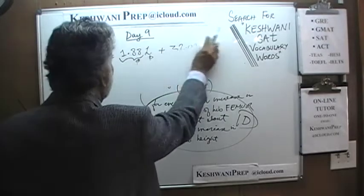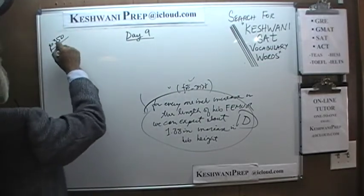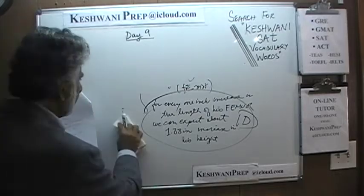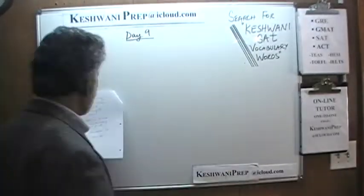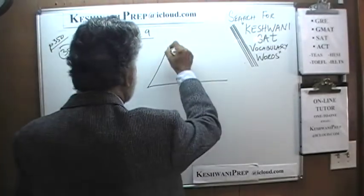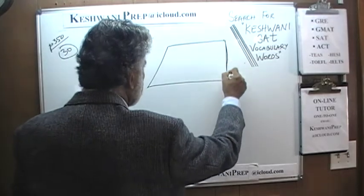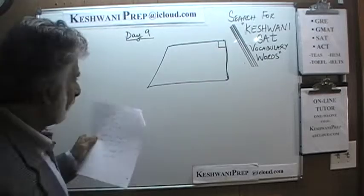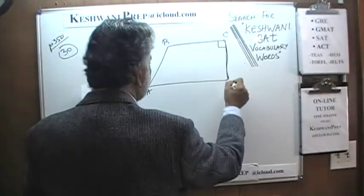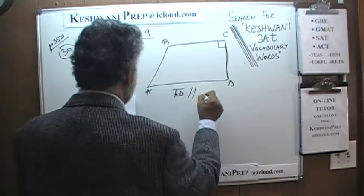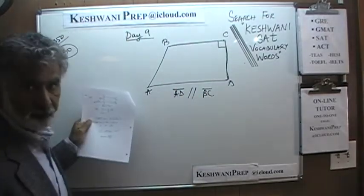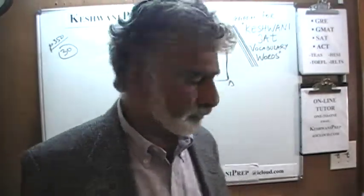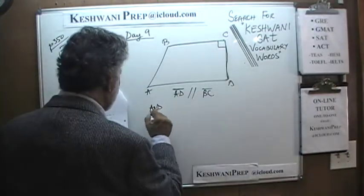Number 30. At number 30 we have a geometry problem. We have a quadrilateral that is given to us that looks something like this, with vertices A, B, C, D. We are told that this angle right here is the right angle. The first thing we are told is that line AD is parallel to BC. It doesn't have to be obvious — we have to be told. So these two lines are parallel.